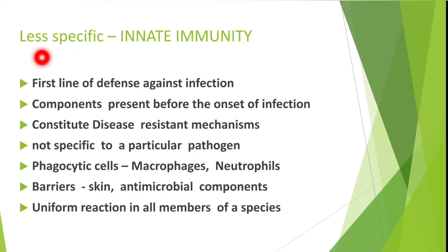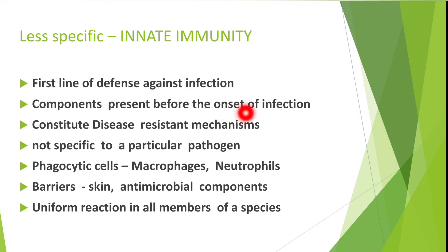Let us talk about the less specific component of the immune system which is innate immunity. By birth, all we have this type of immunity and it provides the first line of defense against infection. Most of the components of innate immunity are present before the onset of infection and constitute a set of disease-resistant mechanisms that are not specific to a particular pathogen. The phagocytic cells such as macrophages and neutrophils, and the barriers such as skin and a variety of antimicrobial components synthesized by the host, all play important roles in innate immunity.